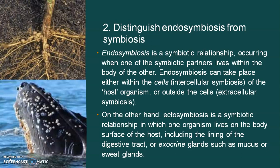If you look at ectosymbiosis, the barnacles on whales is an example. It is a commensalism relationship — barnacles are sea organisms that live on whales, on the body surface of the host. It can also include the lining of the digestive tract and exocrine glands. If something lives on the body surface of the host, it is called ectosymbiosis.